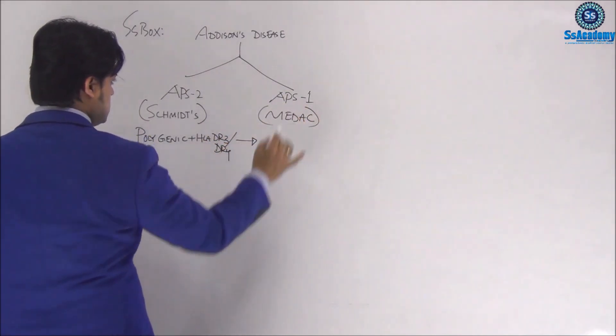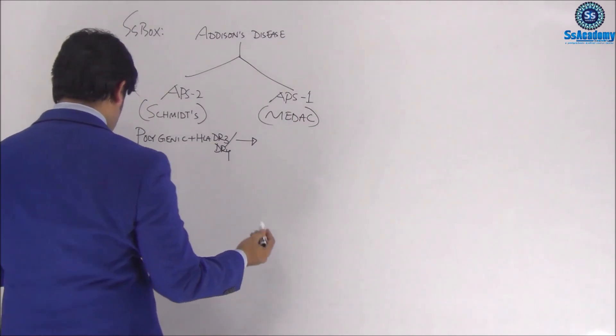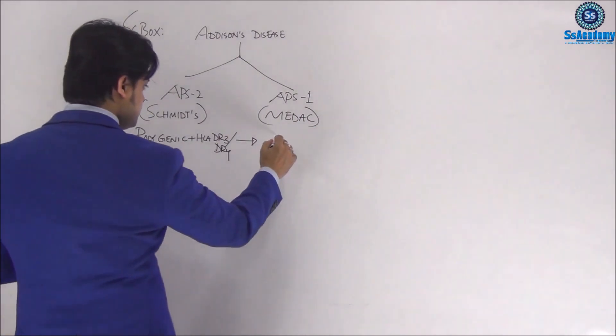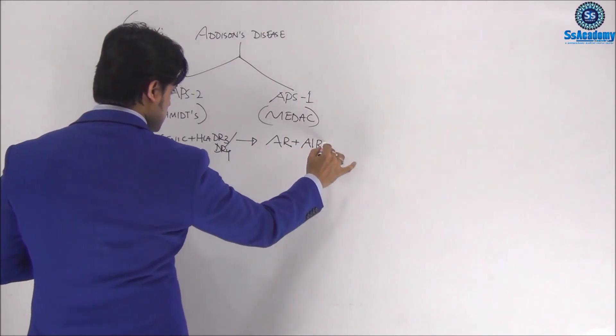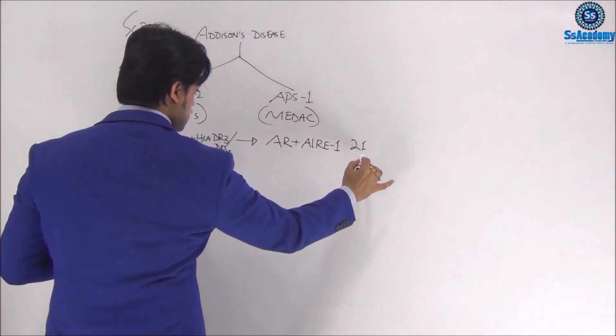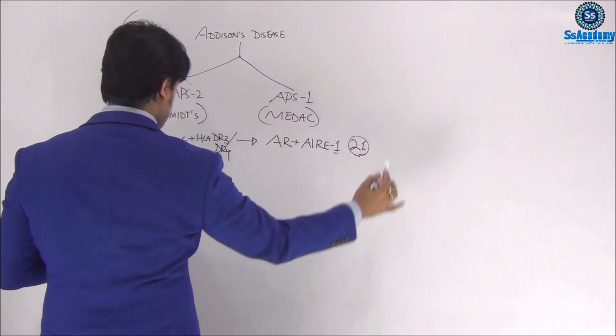In contrast, APS type 1 is an autosomal recessive disorder. The gene is AIRE gene on chromosome 21. So 1 for 21, remember.